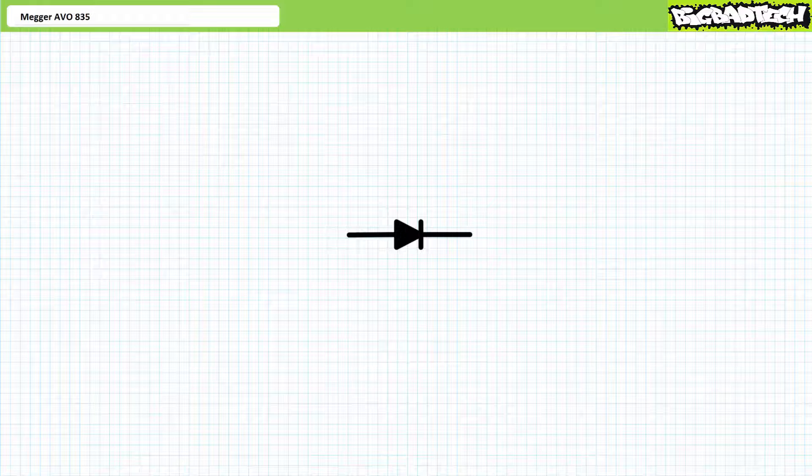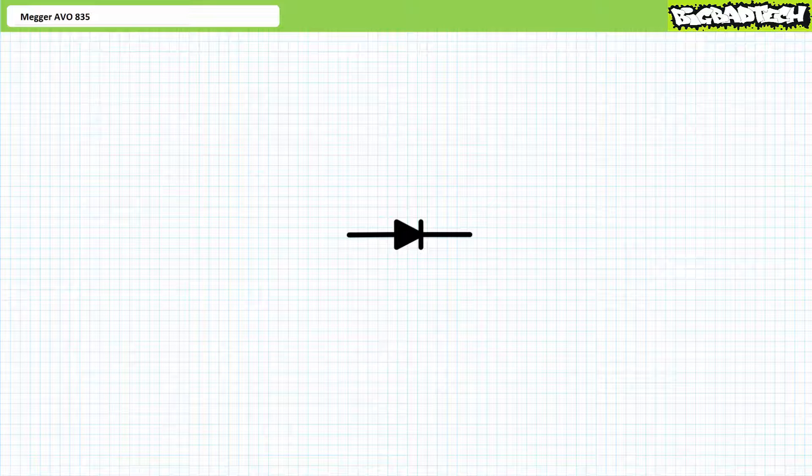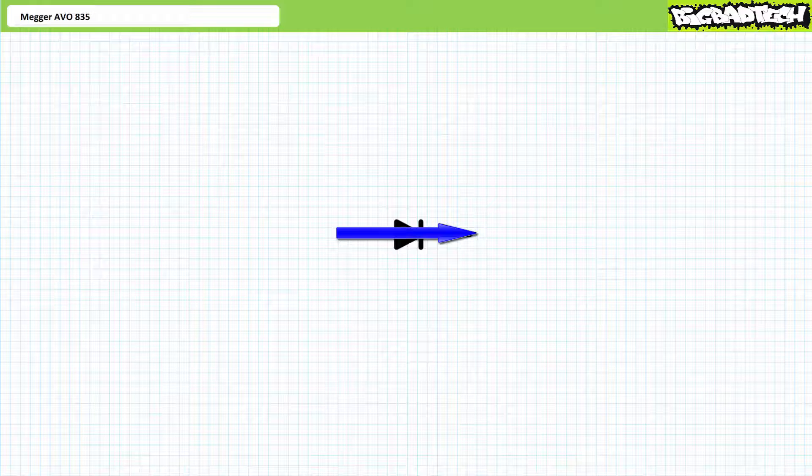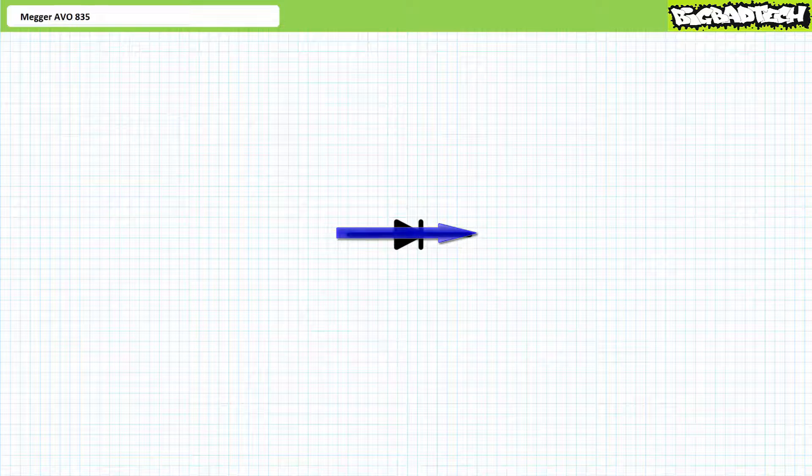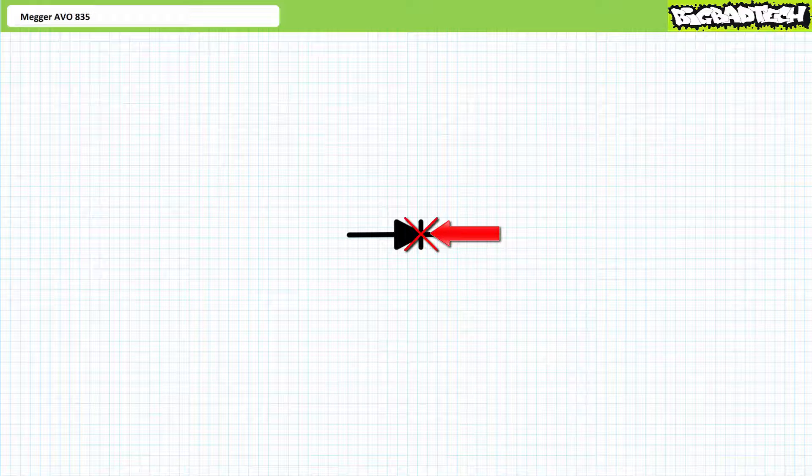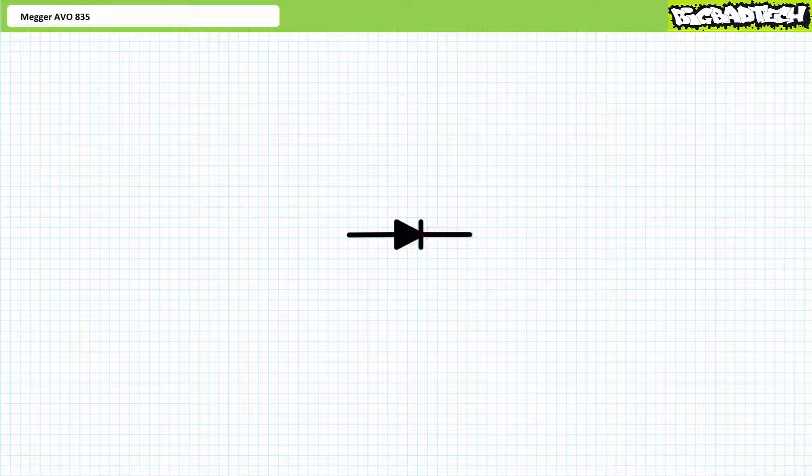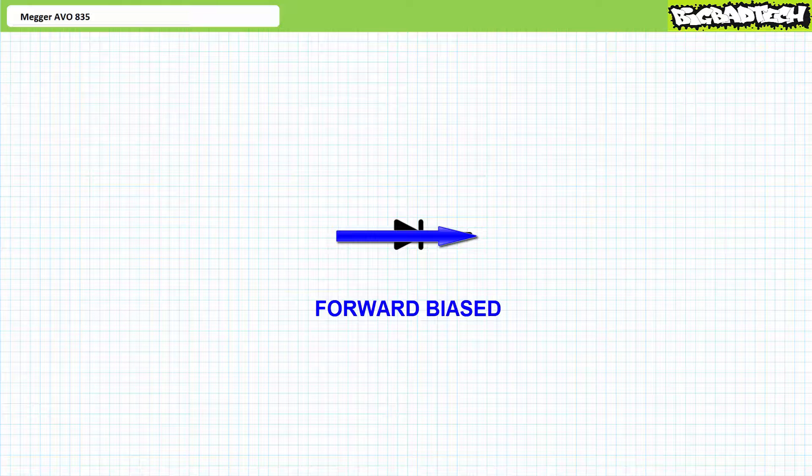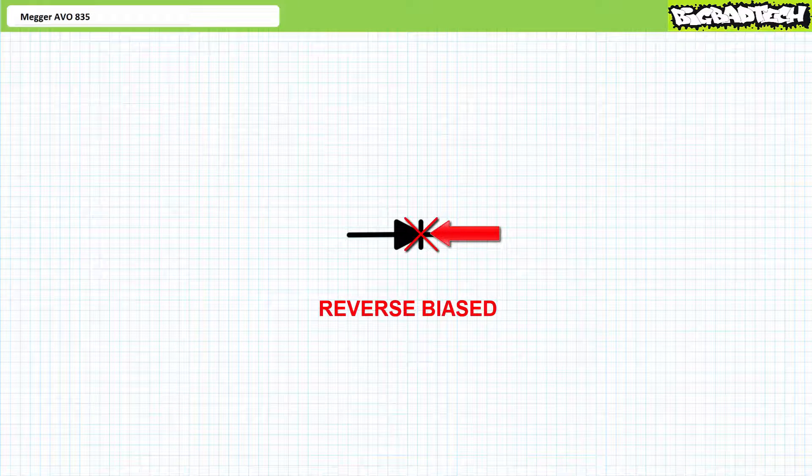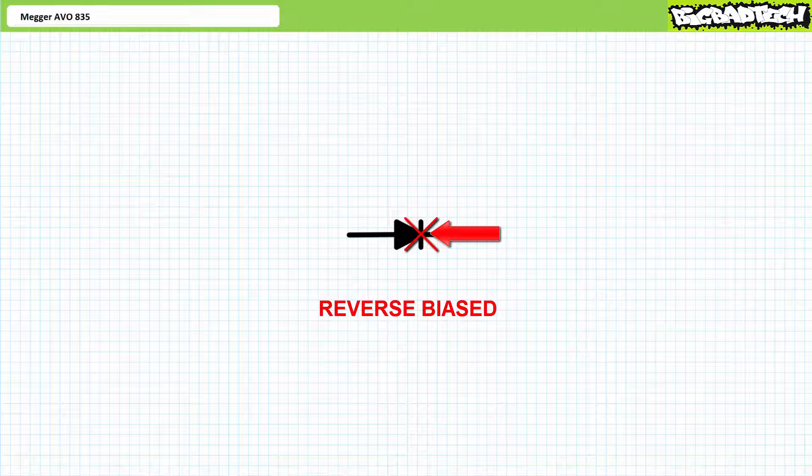Diodes are essentially electrical check valves that allow current conduction in one direction and block it in another. Schematically, an arrow indicates the permitted direction of conventional current flow, whereas the disallowed direction of conventional current flow is identified by a wall blocking flow. When allowing current flow, a diode is said to be forward biased. When disallowing current flow, a diode is said to be reverse biased.